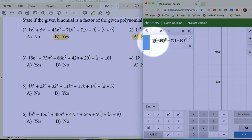Okay, I'm going to check and make sure I typed it in correctly again. 8 times negative 10 to the 4th, 73 times negative 10 to the 3rd, minus 66 times negative 10 to the 2nd, plus 42 times negative 10, plus 20.